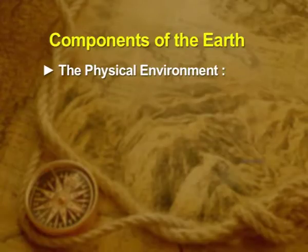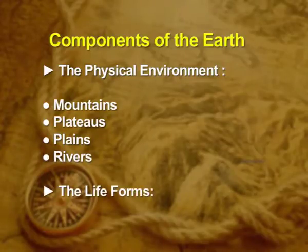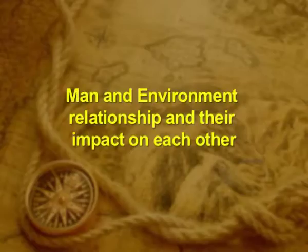We study two major components of the Earth. The first is the physical environment, which includes mountains, plateaus, plains, rivers, etc. The second component includes all the life forms — that is, the plant and the animal kingdom. The interdependency of these two components helps us understand human geography. It is a core concern of geography to understand the man and environment relationship and their impact on each other.